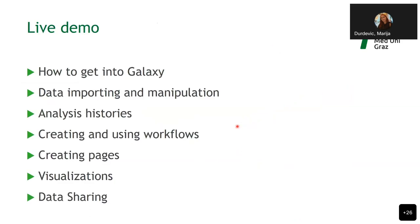All jobs are executed on our nodes — we have 10 nodes plus one GPU node, and jobs are managed by SLURM. Before switching to the live demo, here is what I'm going to show in Galaxy: how to log in, import and manipulate data, analyze data and keep histories, create and use developed workflows, create pages embedding Galaxy objects, use visualization tools, and share data to Galaxy users or outside Galaxy.